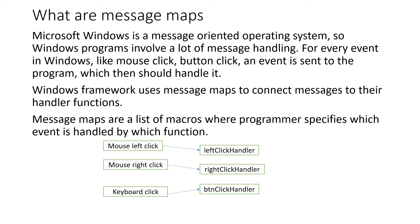The Windows framework uses a lot of messages, and these messages are connected to their handlers using message maps. Message maps are in general a list of macros where the programmer specifies which event or which message is handled by which function. There is a one-to-one mapping between mouse left click, right click, keyboard click events and particular handler functions.